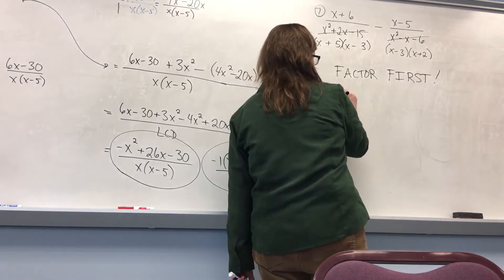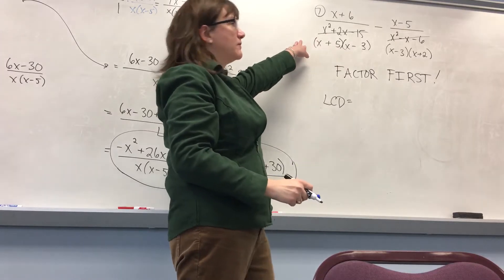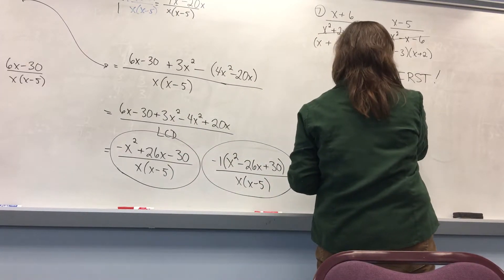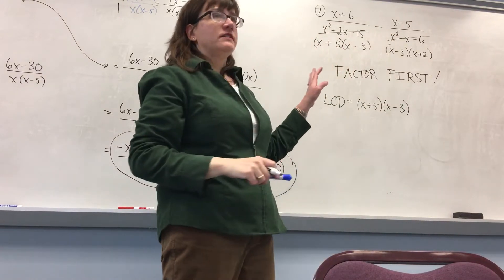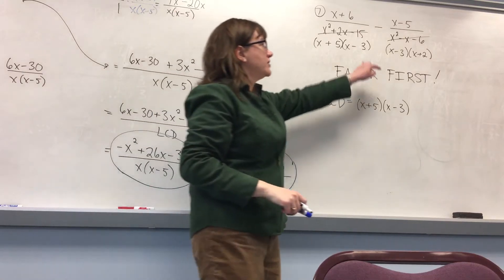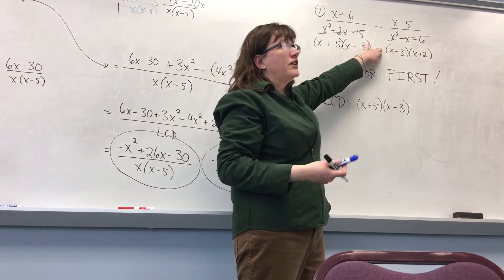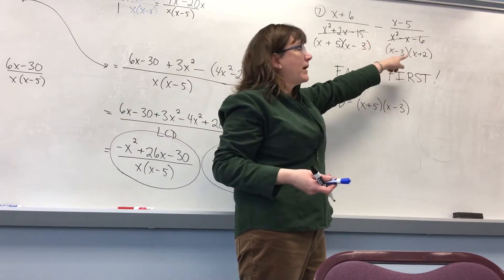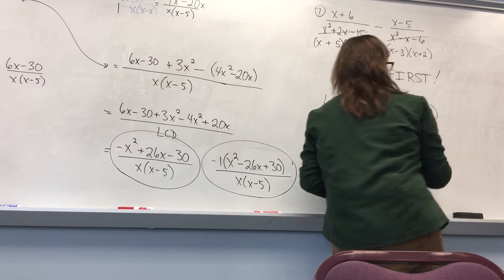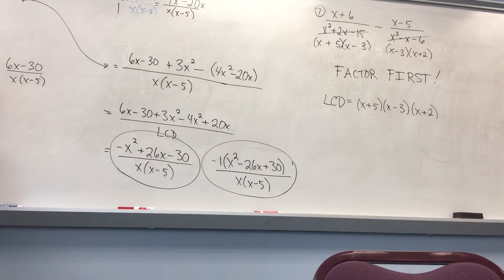My least common denominator has to represent all of the factors. I need to have all the factors from the first fraction: x plus 5 and x minus 3. Then I look and see if there's anything else needed for the second fraction. Is x minus 3 already there? It is, so I don't need it again. What about x plus 2? I don't have that one, so I do need it. So my LCD is x plus 5 times x minus 3 times x plus 2.